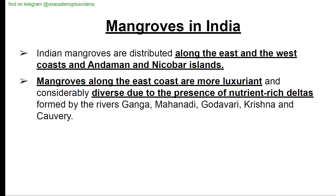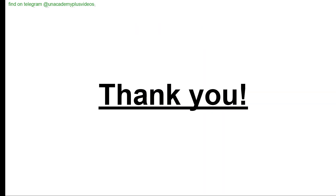Indian mangroves are distributed along the east and west coast and Andaman and Nicobar Islands. Mangroves along the east coast are more luxuriant and considerably diverse due to the presence of nutrient-rich deltas formed by the rivers Ganga, Mahanadi, Godavari, Krishna, and Kaveri.